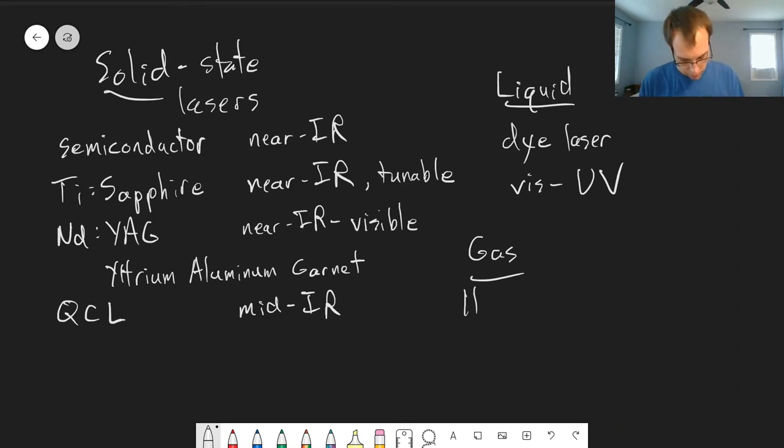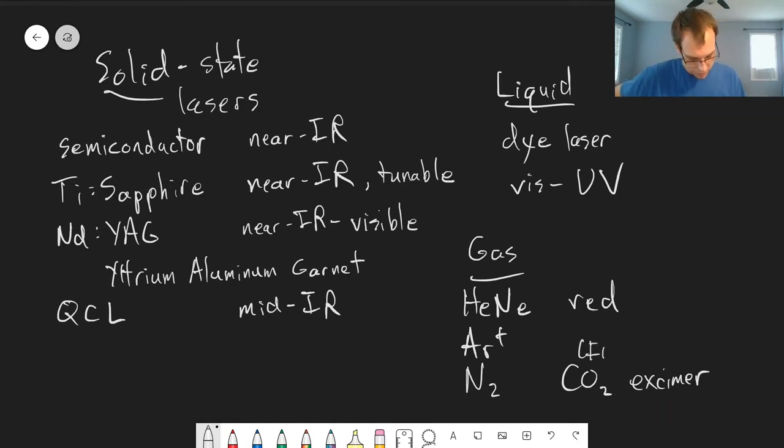And so one of the most common ones, gas phase, is the helium neon laser, or HeNe. This emits specifically red light. There's an argon ion laser, nitrogen laser, CO2 lasers, and another one, excimer, an excited dimer laser. So CO2 works in the infrared, N2 is UV, argon is visible, and excimer lasers work in the UV.